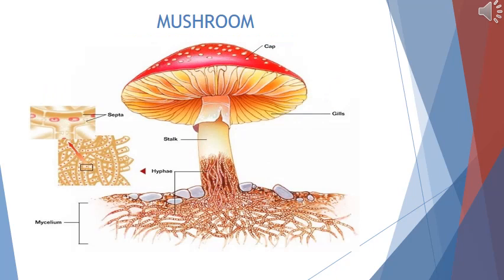The favourite mushrooms we eat in pizzas and other bakery items also belong to Kingdom Fungi. We eat them because they are a rich source of proteins. The body of a mushroom — whether it is the stalk or the umbrella-shaped cap — is made up of thread-like structures called hyphae.